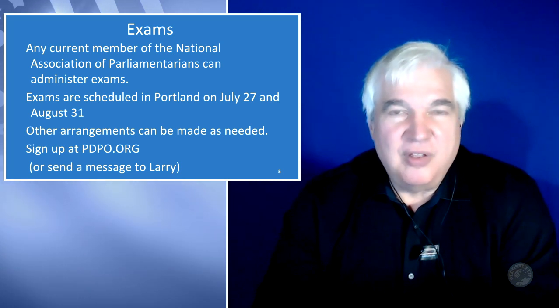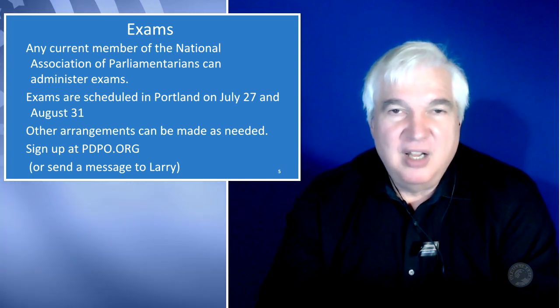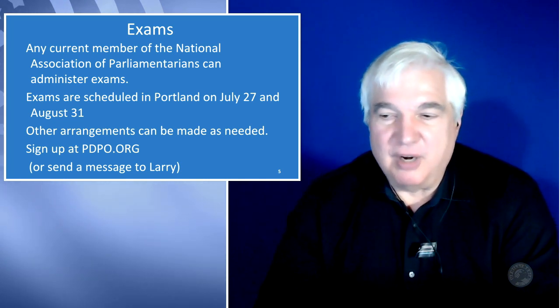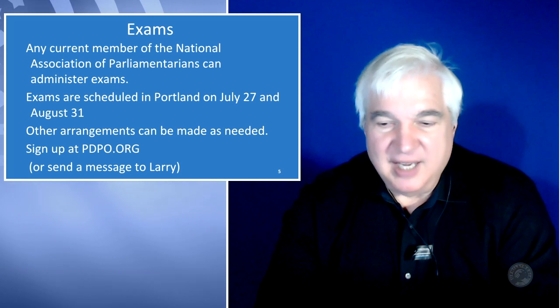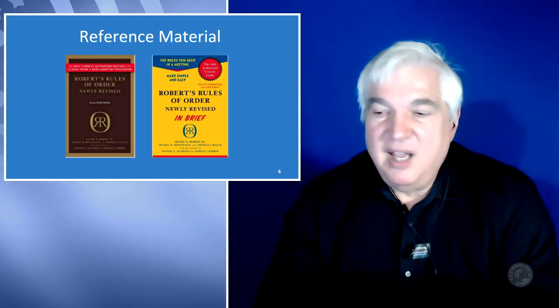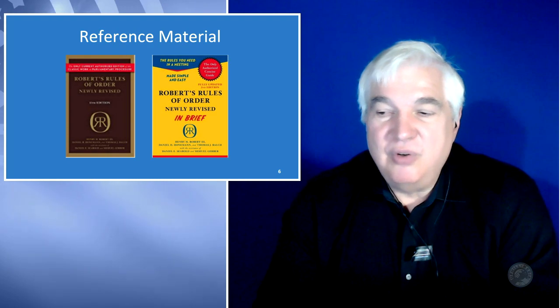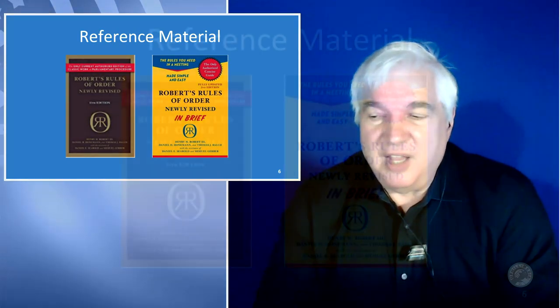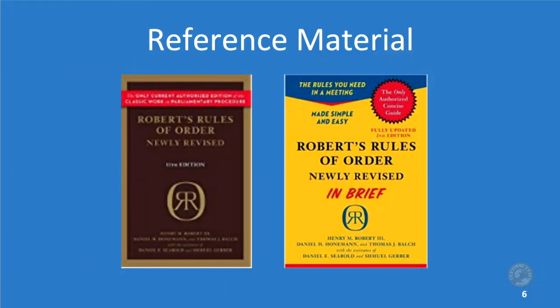There are also links to the National Association of Parliamentarians and the Oregon Association of Parliamentarians on the website. On slide six or eight, there are two reference material guides. The yellow book — Robert's Rules of Order in Brief — allegedly contains all the information you need to pass the quiz to become a member of the National Association of Parliamentarians, and it'd be great if everyone at least mastered this material.